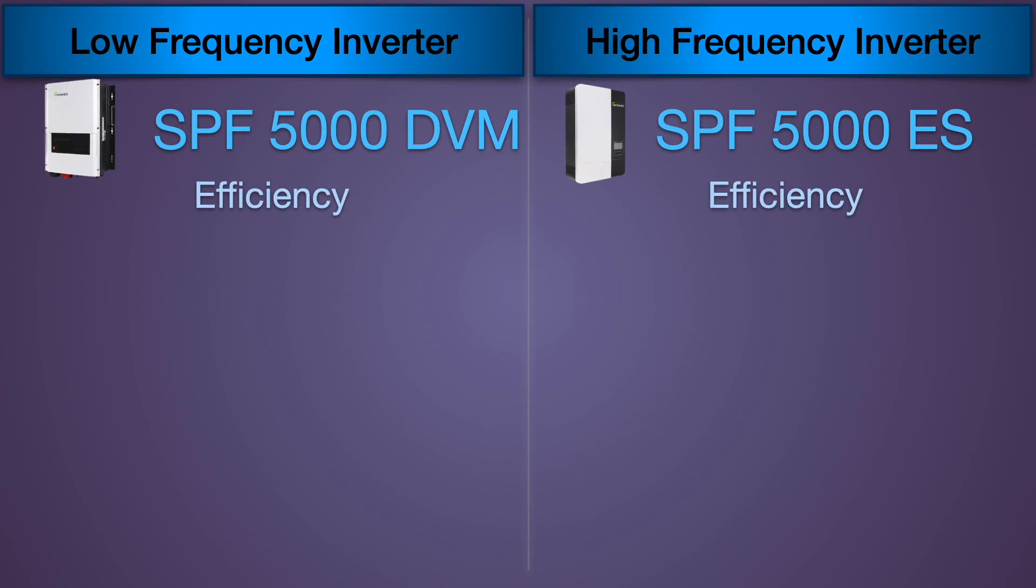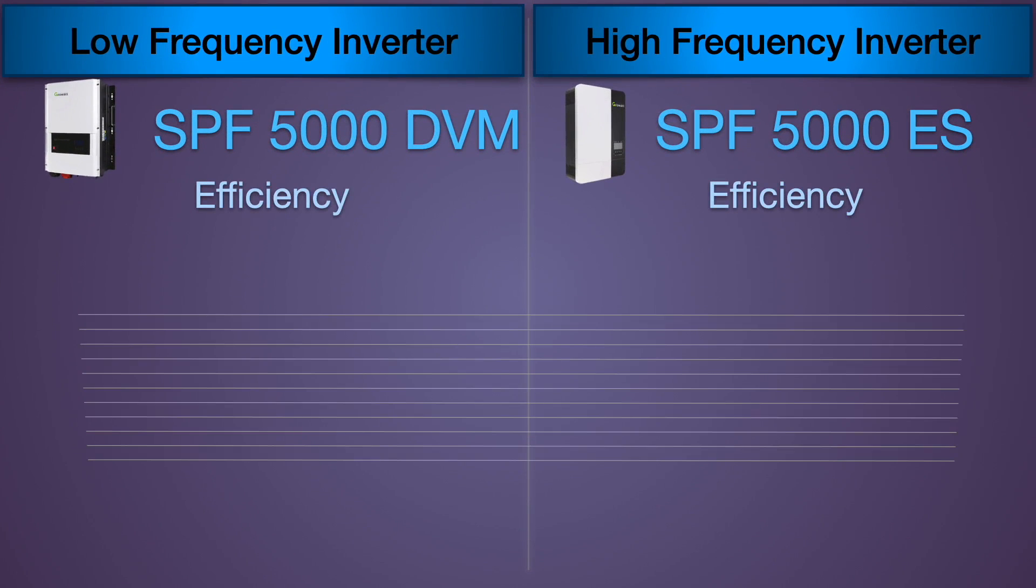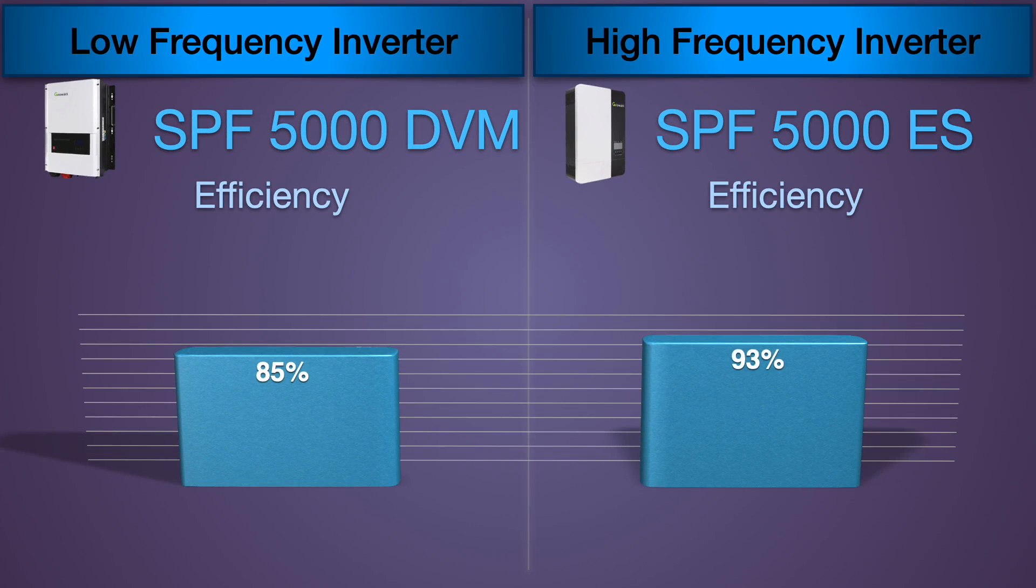Let's compare efficiency of the two inverters. And we're talking about just the inverter part of the unit, not the solar charger. The low frequency inverter has 85%. High frequency inverter is 93% or 8% more.